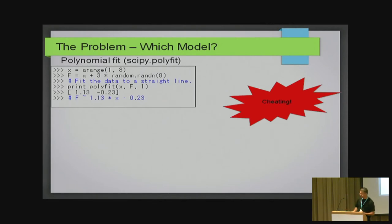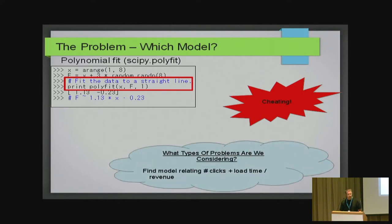The only problem with this example is that it's cheating. How do I know at this point that what I want to fit at all is a straight line? Maybe I want a parabola or something more complicated. We usually in real life don't know the model in advance.